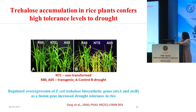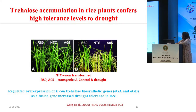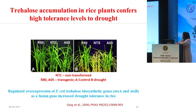One example: trehalose accumulation in rice plants confers high tolerance levels to drought. This shows the non-transformed plants versus after putting in the RAT and A05 transgenic constructs — the control plant under drought conditions compared to the genetically modified plant, which is visually much more healthy and able to resist drought. This was achieved through regulated overexpression of E. coli trehalose biosynthetic genes as a fusion gene, which increased drought tolerance in rice — two genes from E. coli being transformed and incorporated into rice in the trehalose biosynthetic pathway.